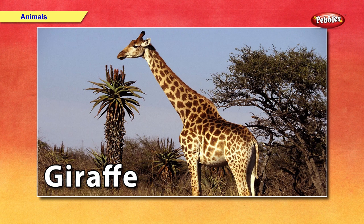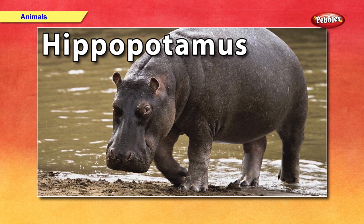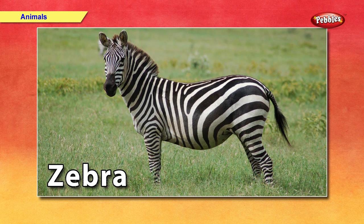Giraffe — it has a very long neck. It is the tallest animal. Hippopotamus — also called hippo. A hippo spends most of his time inside water and comes on land to eat grass. Zebra — it is a member of the horse family. A zebra has white and black stripes on his body.